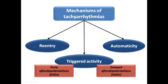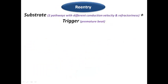Triggered activity has two subtypes: early afterdepolarization and delayed afterdepolarization. Starting with re-entry — from its name, re-entry is like a circuit formed around an obstacle. An impulse rotates in a circular fashion around a fibrous obstacle, which is usually a scar, or sometimes a normal anatomical obstacle present in the heart. We need two prerequisites for re-entry.